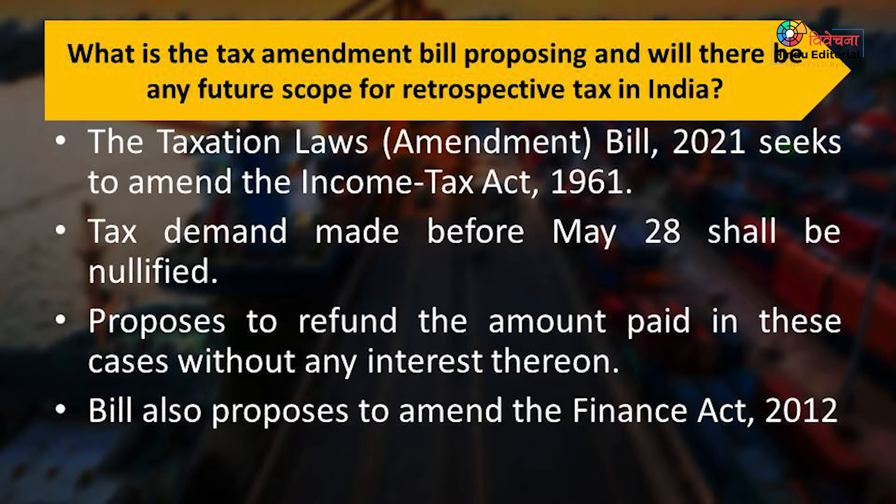On August 6, the bill was approved by the lower house, and on August 9 the bill was passed by the upper house. It has been sent to the president for his assent. Once the bill receives the president's assent, which is only a matter of procedure, the Indian government aims to settle the pending tax disputes involving three cases: New Single Wireless, WNS Capital, and Vodafone.